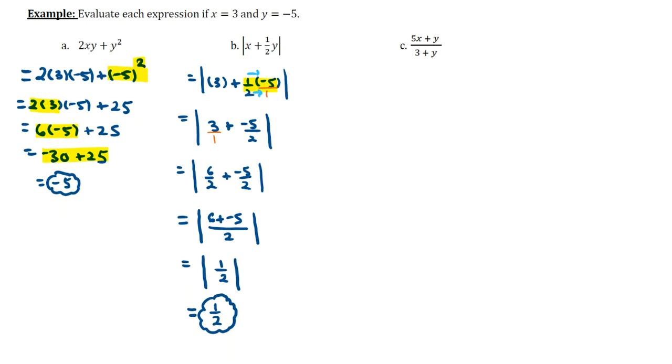Last but not least is example part C. We have 5x plus y all over 3 plus y. Let's go ahead and replace x with 3, so 5 times 3 plus y which is negative 5. That's all over 3 plus another copy of negative 5.